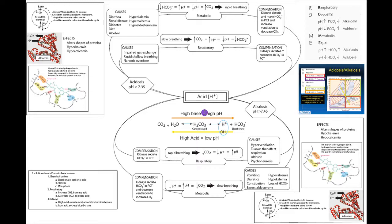The reason acid-base imbalance is important is because acids and hydroxyl ions can change the shape of proteins. Proteins need to be in a particular shape, and if you change that shape, they might not function well or could be destroyed. Acid is also important because it alters potassium and calcium concentrations, which are both pretty important ions.